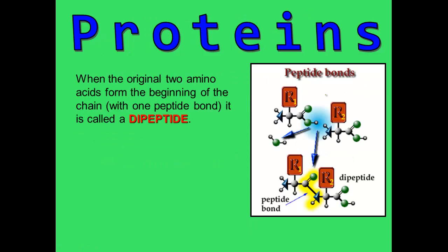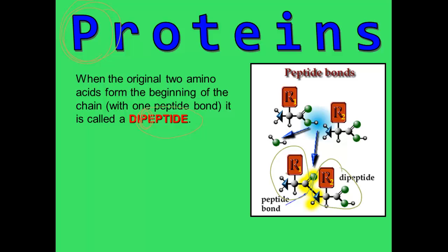If you take two amino acids together, you've essentially created a dipeptide. Whenever you see the word peptide, think protein — they both start with P. So a structure with two amino acids, each with their own R group, is called a dipeptide held together with a peptide bond.